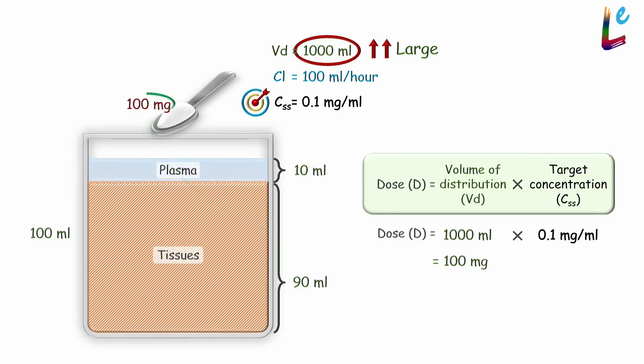That is, if we add 100mg of the drug to the tub, we will be able to achieve our desired plasma concentration of 0.1mg per ml.